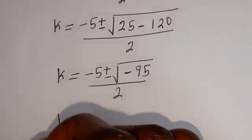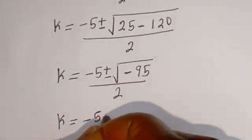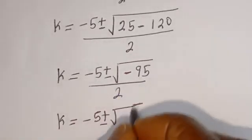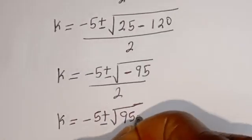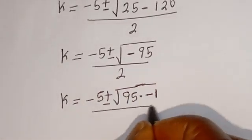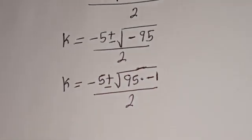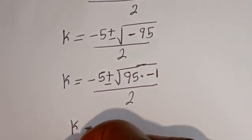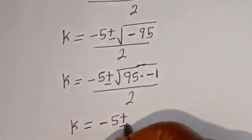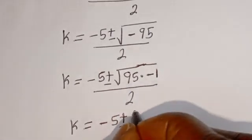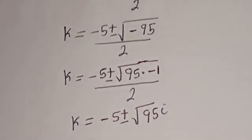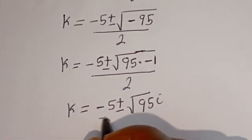We have K equals minus 5 plus or minus the square root of minus 95. Now minus 95 can be written as 95 multiplied by minus 1, divided by 2. This can be written as the square root of 95 times i, divided by 2.